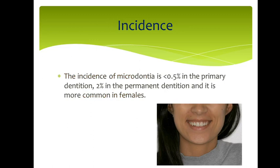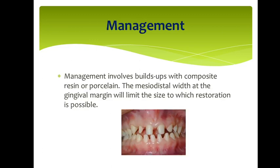Regarding incidence, microdontia occurs in less than 0.5% of primary dentition and approximately 2% of permanent dentition. It is more common in females.